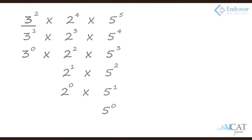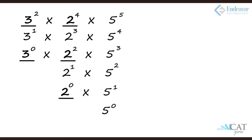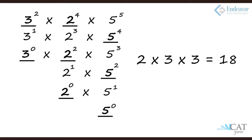What are the number of perfect square factors of 4,50,000? For 3: 3² and 3⁰ are perfect squares — 2 options. For 2: 2⁴, 2², and 2⁰ are perfect squares — 3 options. For 5: 5⁴, 5², and 5⁰ are perfect squares — 3 options. So the number of perfect square factors is 2 × 3 × 3 = 18. There are 18 perfect square factors of 4,50,000.